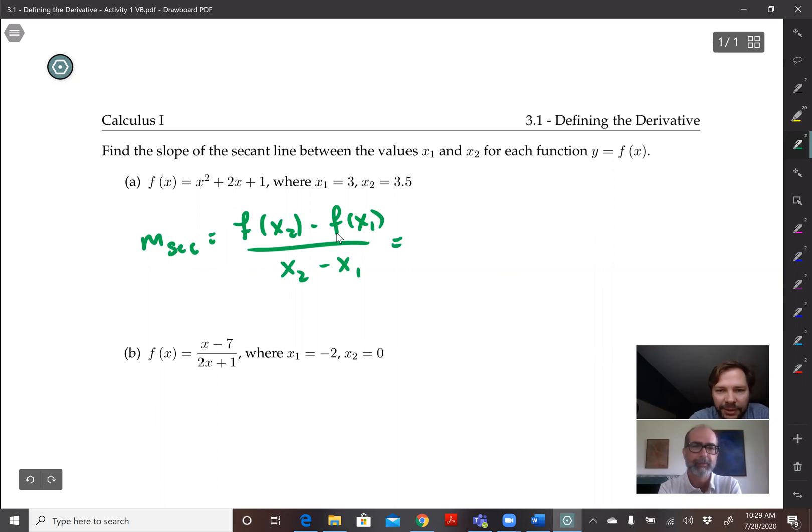So that would be f(3.5) minus f(3) all over 3.5 minus 3. So 3.5 when I plug that in, it's going to be 3.5 squared, which is—we did this ahead of time—that's 10.25 plus 2 times 3.5, which is 12.25.